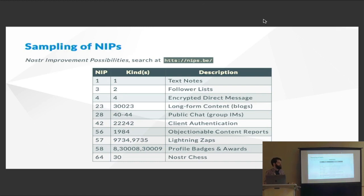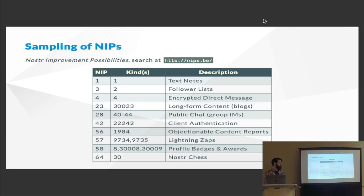There are lots of different application kinds beyond kind 1 text notes. These are some of my favorites — not necessarily by popularity, but they show interesting possibilities for what Nostr can do. We have a way of representing a follower list, which is great for discovering people on the network. We have DMs, and there was a talk this morning about extending that to something like email. We have blogs with advanced features like replaceability and versioning, and group chat in a Telegram style.